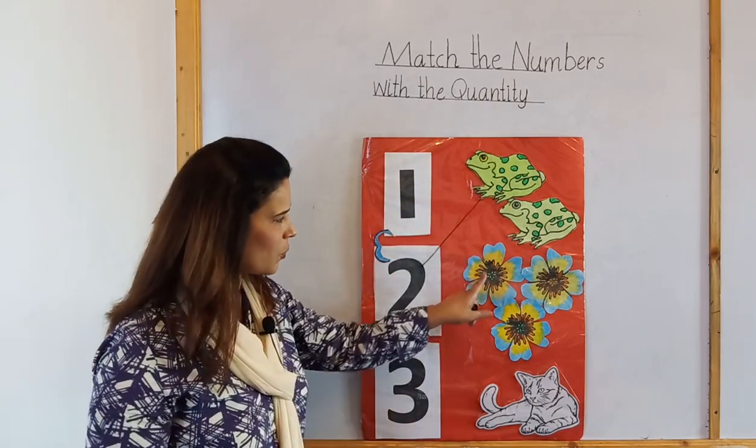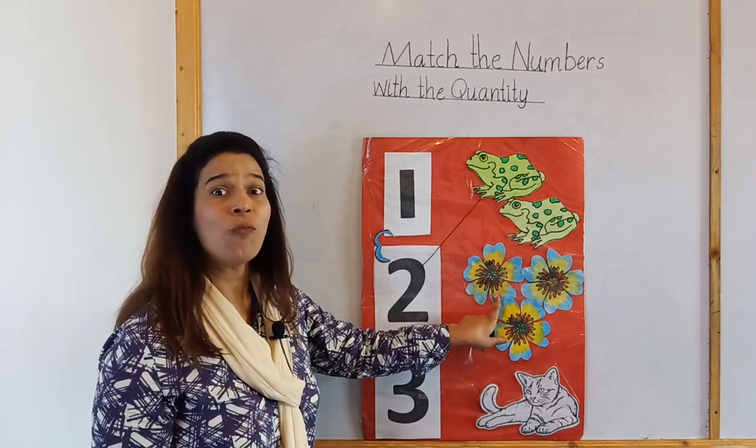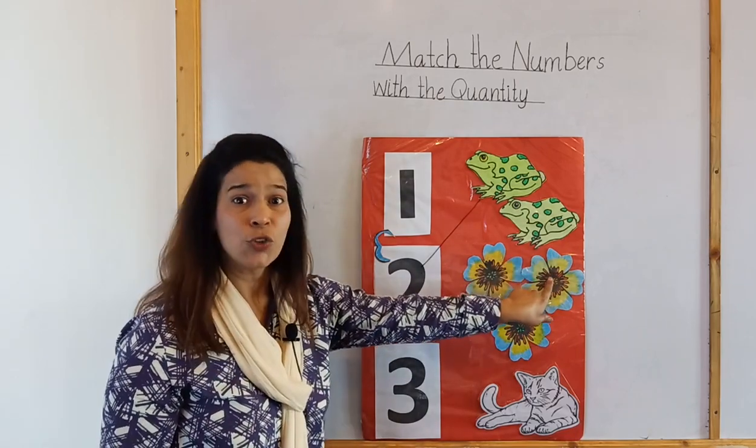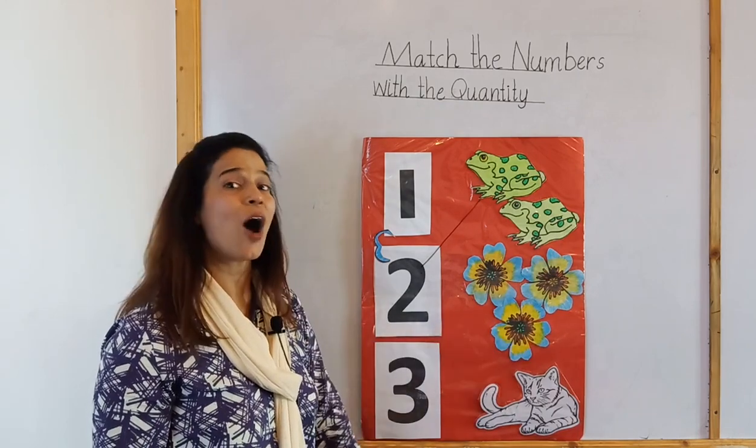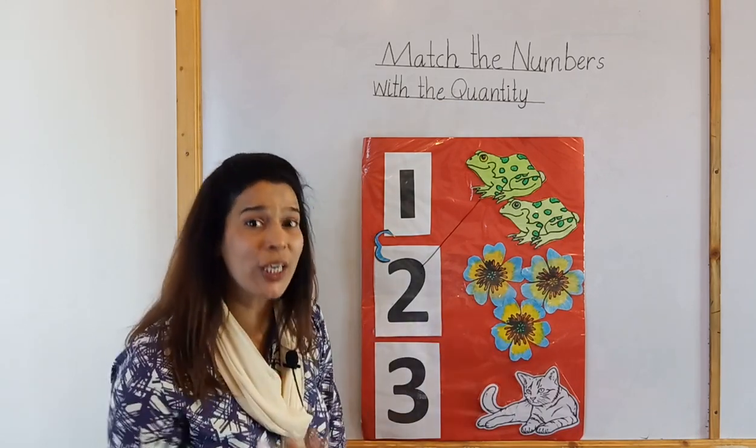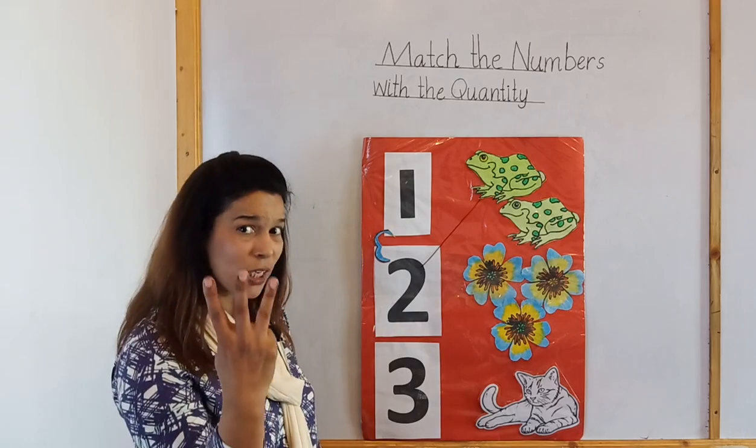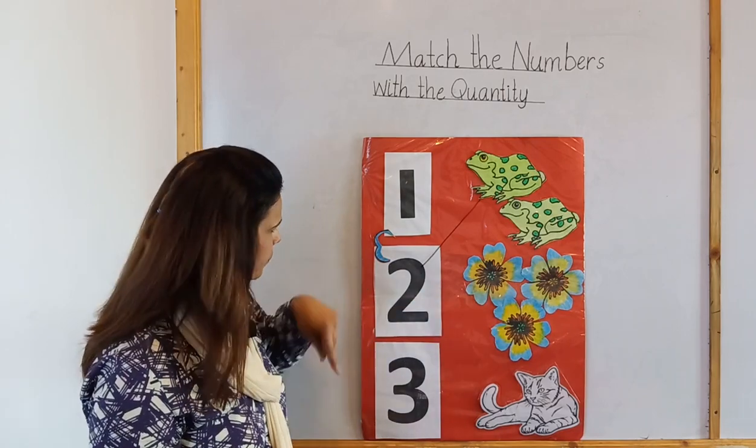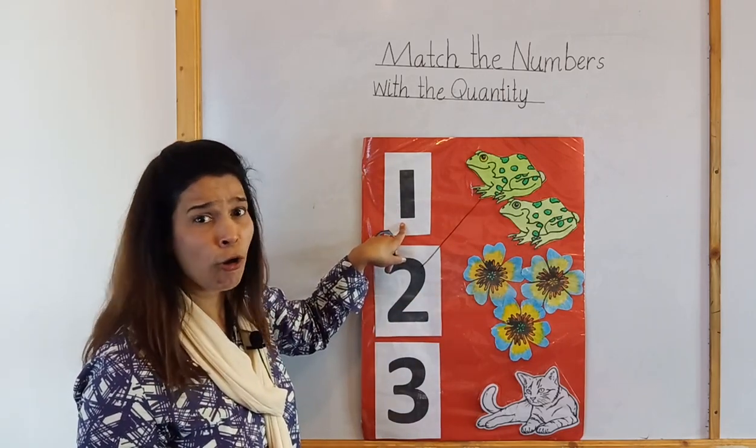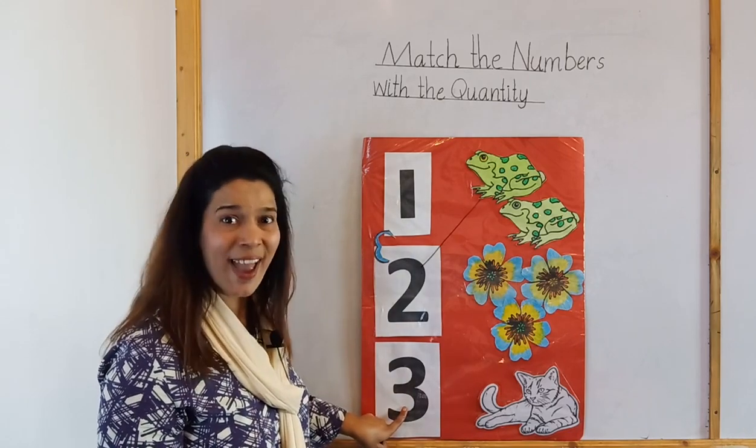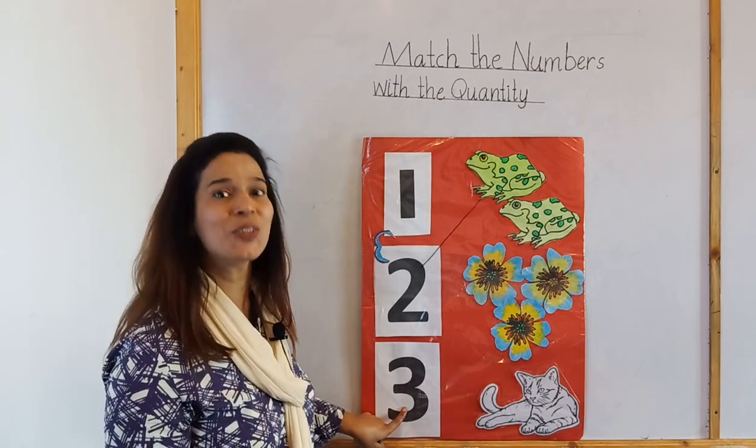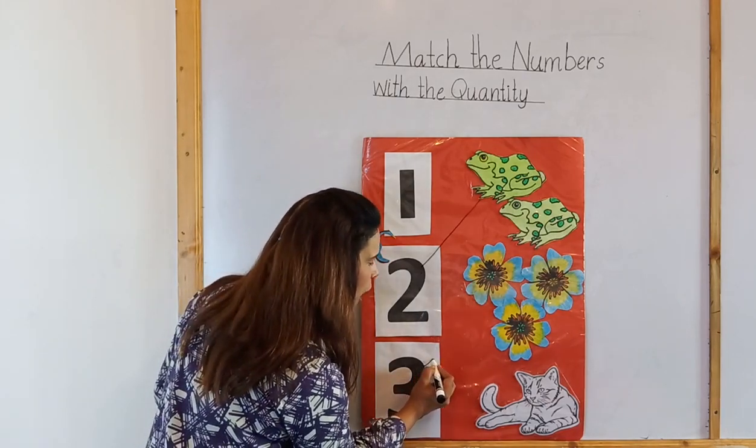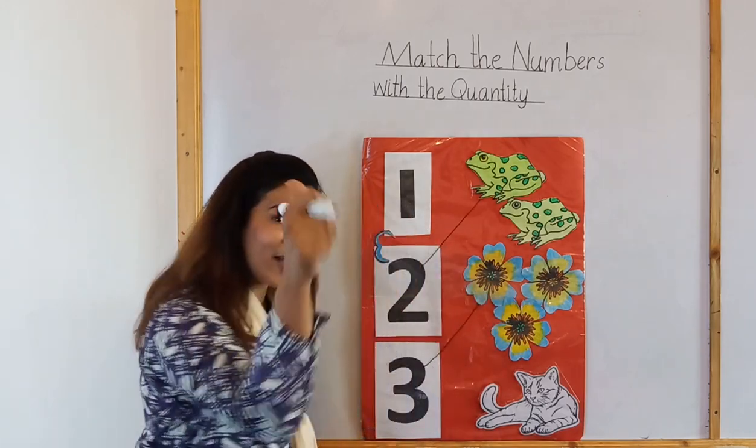Now what is this? These are flowers. Let's count. 1, 2, 3. How many flowers? 3 flowers. Let's match it with number 3. Is this number 3? No. Is this number 3? Yes! This is number 3. Now match number 3 with 3 flowers. Very good.